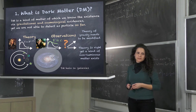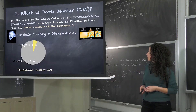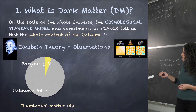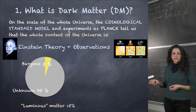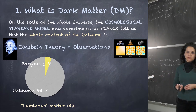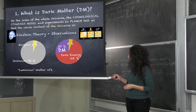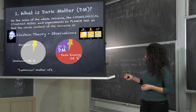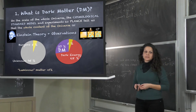At astrophysical scales this is what we observe, but if we go to cosmological scales, the combination of Einstein's theory with recent observations says that baryons — the luminous matter we know — is just 5% of the whole content of the universe. This 95% is a combination of things we don't know: in particular, 68% is a kind of dark energy and 27% is dark matter.